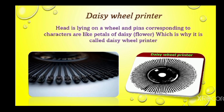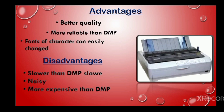The daisy wheel printer is also an impact printer. It is shaped like the petals of a daisy flower, and its characters are arranged on a wheel, so it is called the daisy wheel printer. The daisy wheel printer produces better quality and is more reliable than the dot matrix printer, but it is slower and noisy.